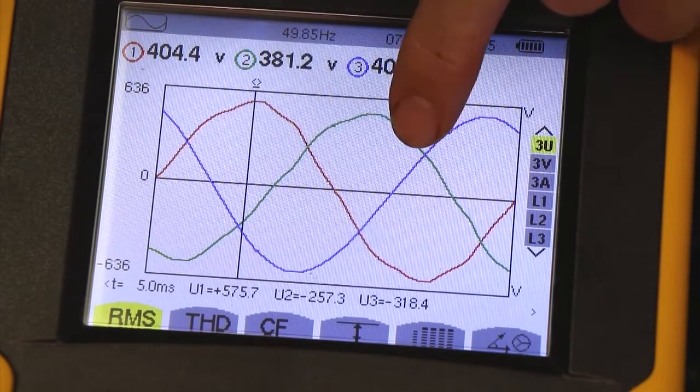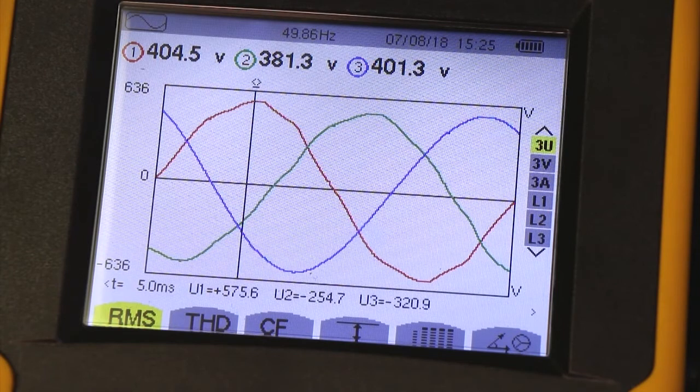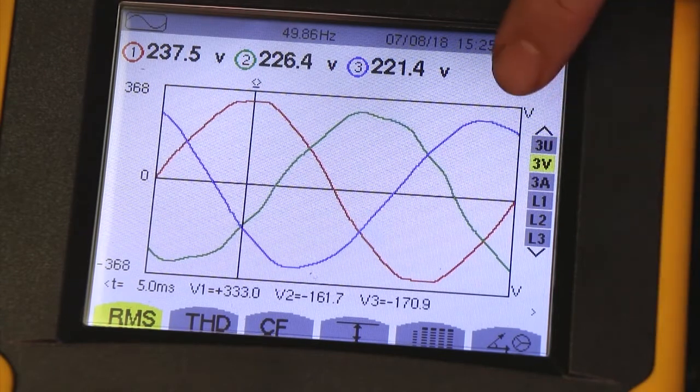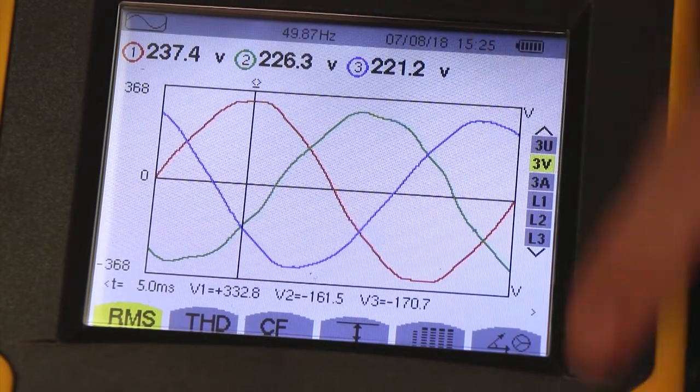At the moment, three phase-to-phase voltages. If I push down on the cursor, now you're looking at three phase-to-neutral voltages. Press down again, and you're looking at three different currents, and so on.